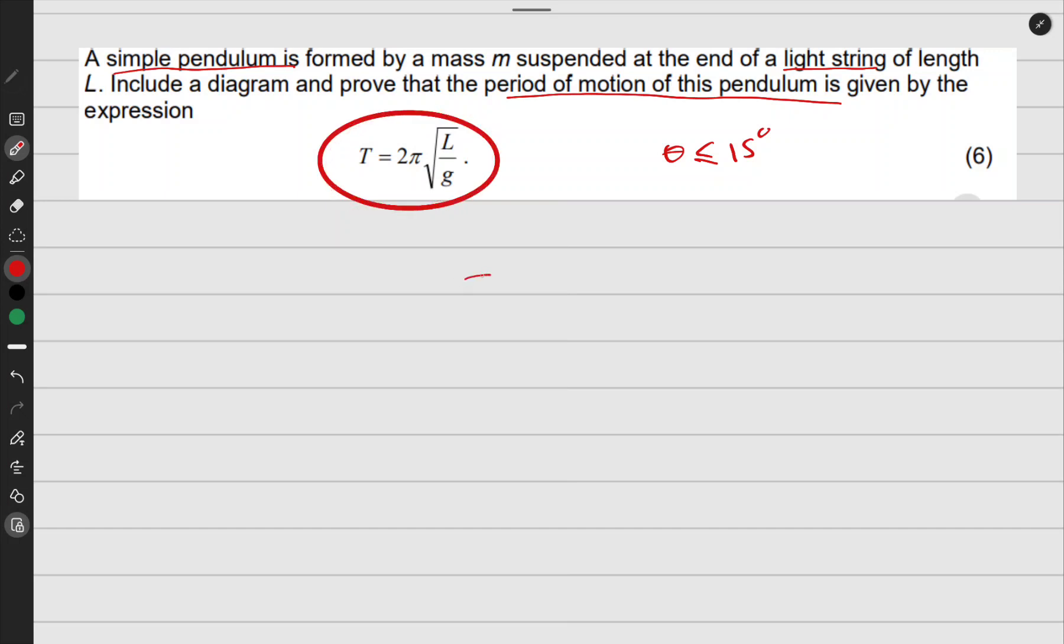We do know the formula for period: period equals 2π times the square root of m over k. This is the formula for the period, so we're trying to get this related to this. Let's try that.